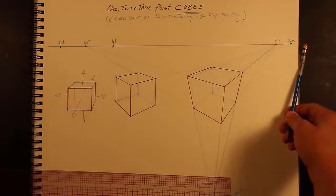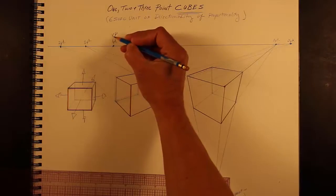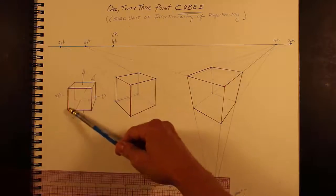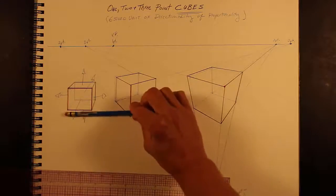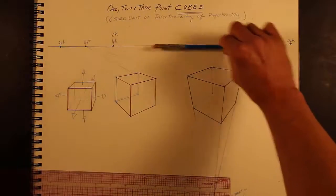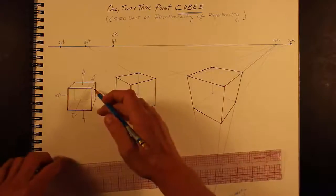So what we start out with in one point is, of course, always the horizon line, then a vanishing point, and then you start out with doing a square that is perpendicular and parallel to the horizon line. Then after that, you draw your convergence lines.